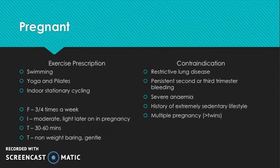Having a history of an extremely sedentary lifestyle is a relative contraindication — going from no exercise when not pregnant to doing a lot when pregnant is a shock to the body, so be careful and sensible. Multiple pregnancies, such as twins, is also a relative contraindication because that's even more strain on the body. Things to avoid include jerky or bouncy movements, jumping, or sudden changes in direction. Anyone pregnant over four months should not lie on their back, and hot or humid environments should be avoided as they can lead to dehydration, which affects the baby.